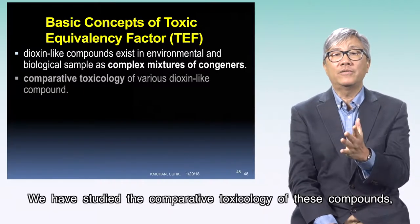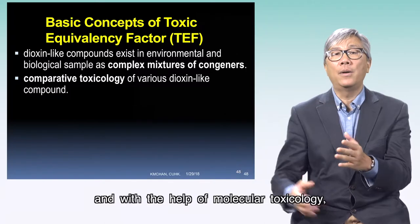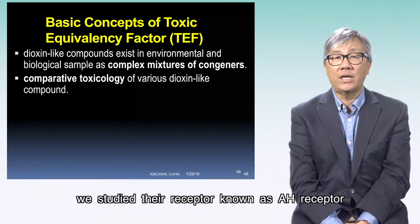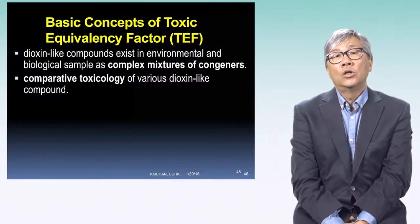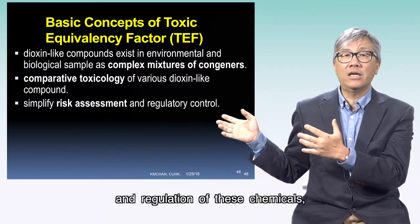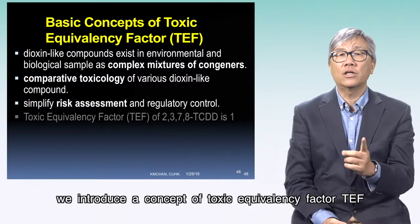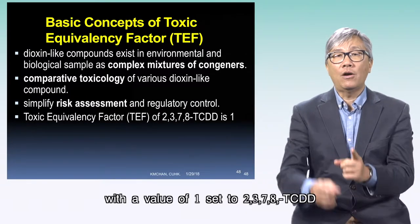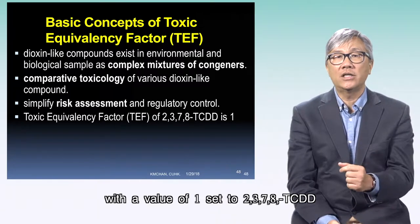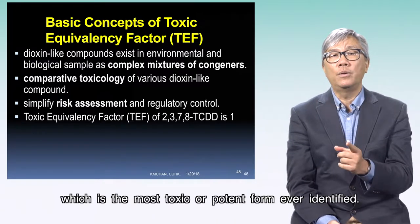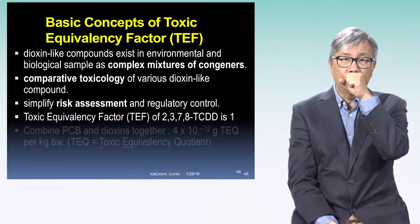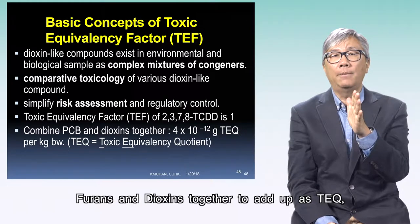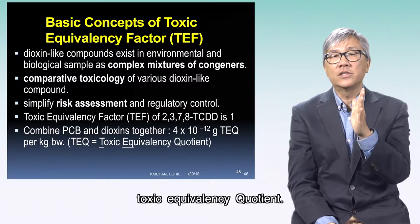We have studied the comparative toxicology of these compounds and, with the help of molecular toxicology, we study the receptor known as the AH receptor or aryl hydrocarbon receptor. To simplify the risk assessment and regulation of these chemicals, we introduced the concept of Toxic Equivalency Factor (TEF), with a value of 1 set to 2,3,7,8-TCDD, which is the most toxic or potent form ever identified. We can hence combine PCBs, furans, and dioxins together and add them up as TEQ — Toxic Equivalency Quotient.